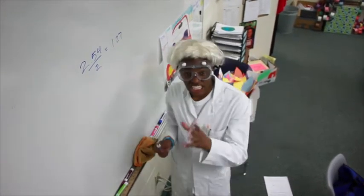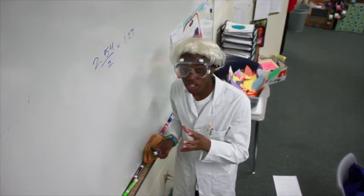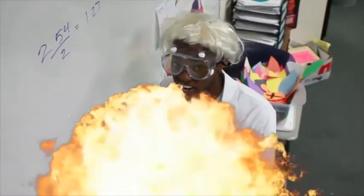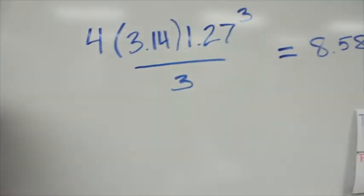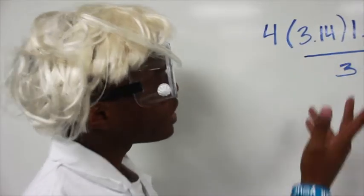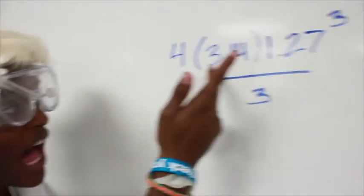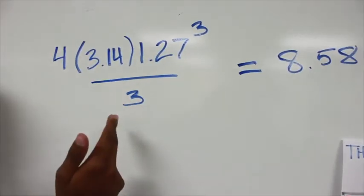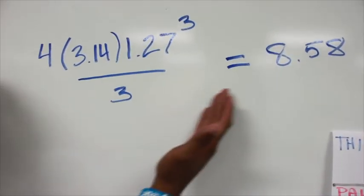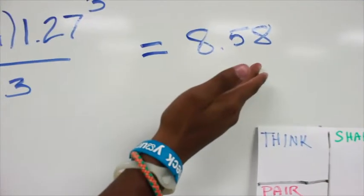The radius is the key to finding the volume of a sphere. With the radius being 1.27, go into this equation: four-thirds pi times 1.27 to the third power, divided by 3. That comes to your answer: 8.58. There's the volume of your sphere.